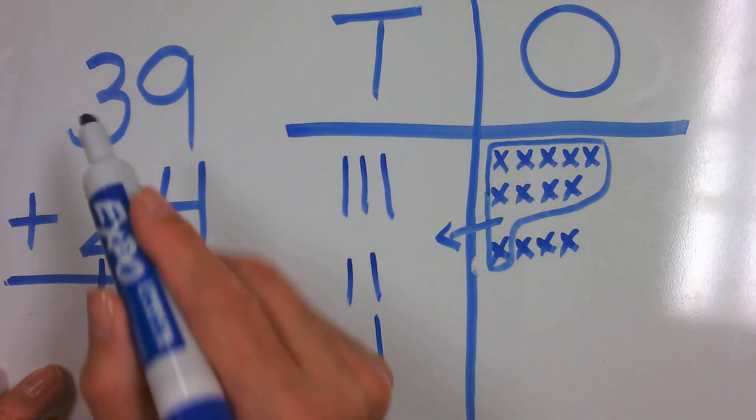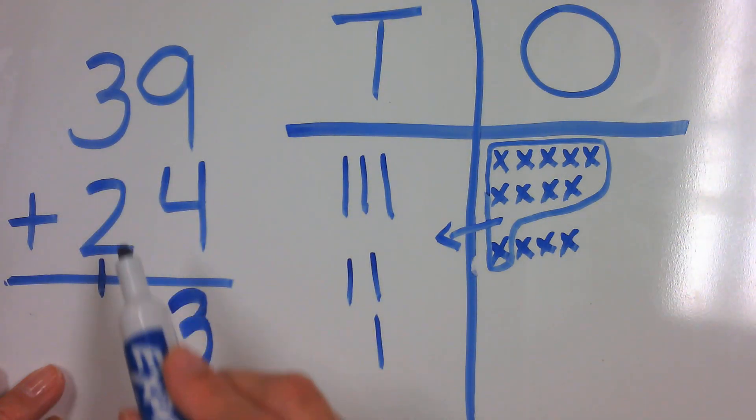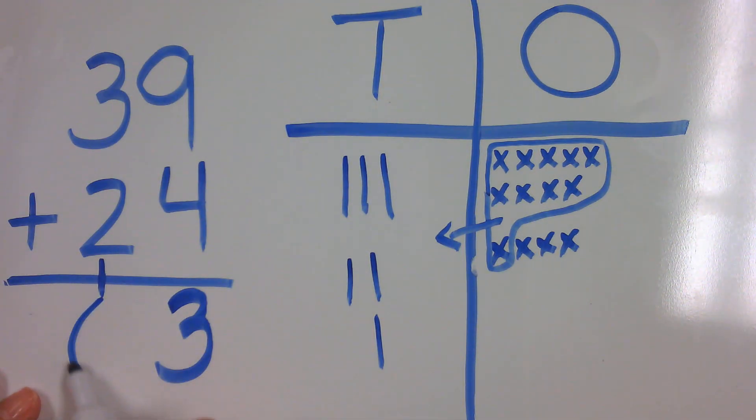So now we add up our tens. Three plus two is five, plus one more ten is, that's correct, it is six.